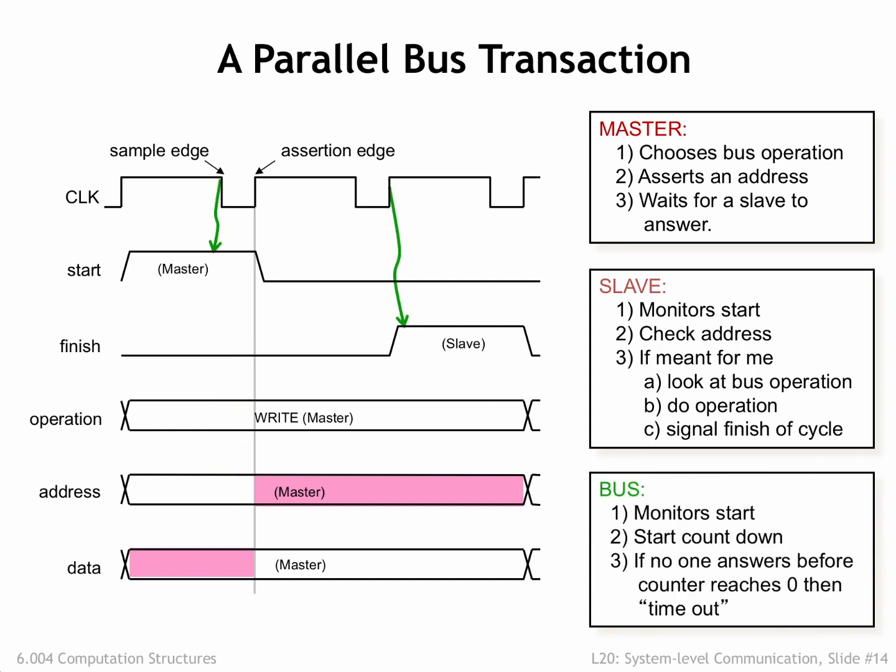The bus itself may include circuitry to look for transactions where the slave isn't responding and, after an appropriate interval, generate an error response so the master can take the appropriate action. This sort of bus architecture proved to be a very workable design for accommodating add-in cards, as long as the rate of transactions wasn't too fast — say, less than 50 MHz.